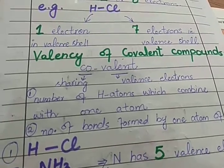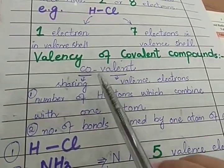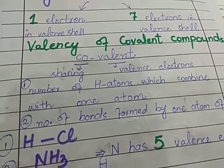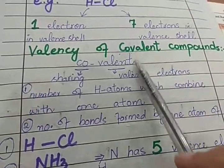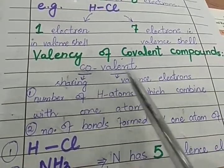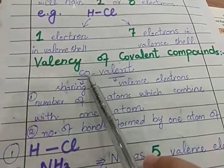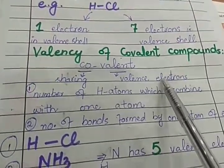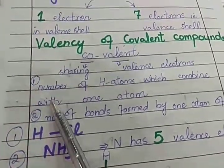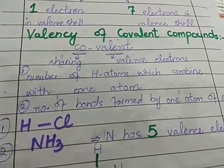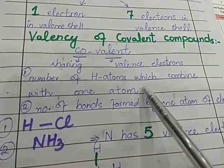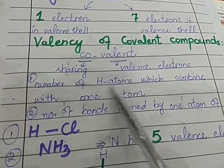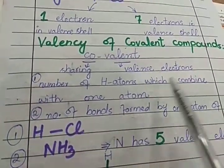We will study valency in two types of compounds: covalent compounds and ionic compounds. In covalent compounds, 'co' means combining by sharing, and 'valent' means valence electrons. Covalent compounds are those in which valence electrons are shared. In simple words, for covalent compounds, valency is the number of hydrogen atoms which combine with one atom of that element.